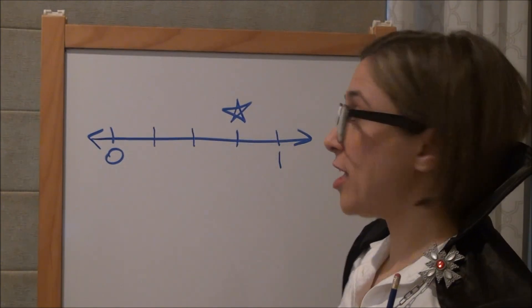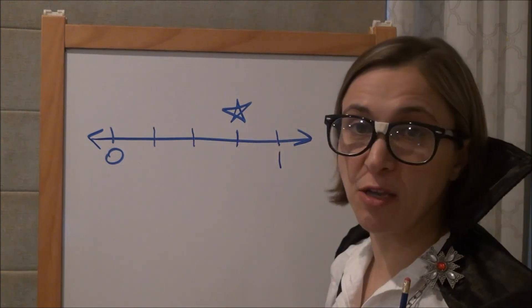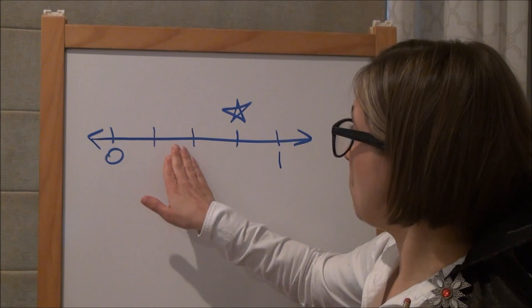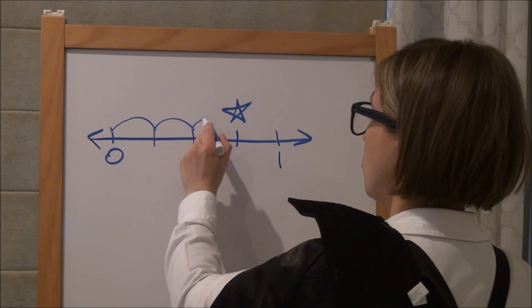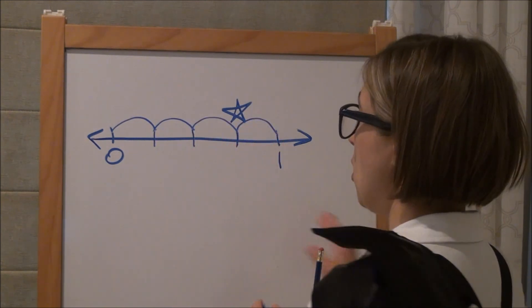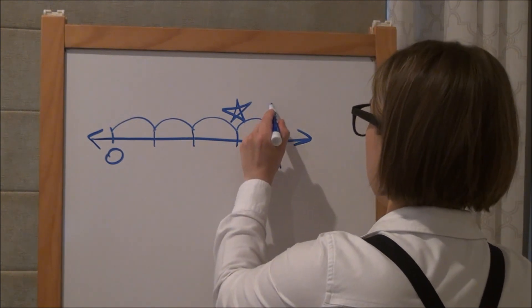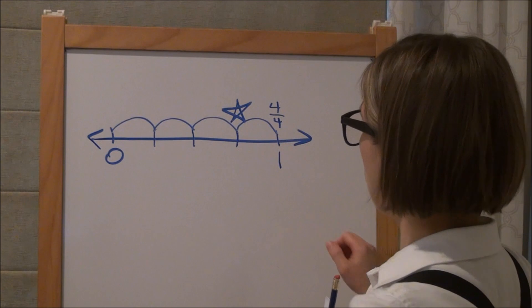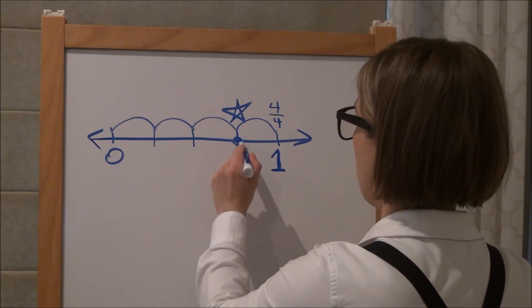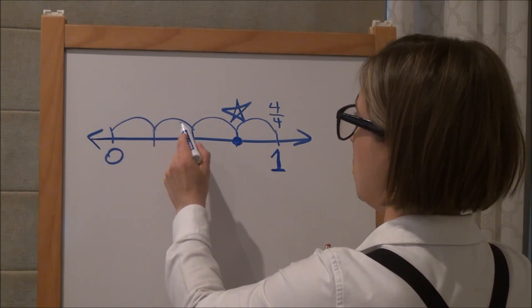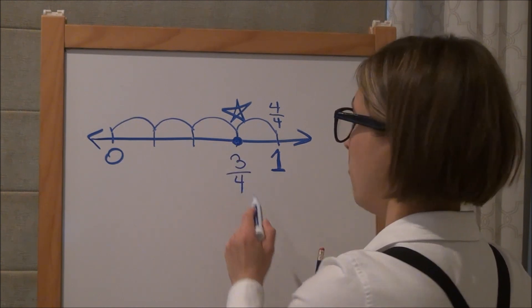Well, look at that. It changed our number line to make it easier to look at. Without changing the value of the star, we just got it to be into equal parts or equal lengths. Here's one, two, three, four. We now have four equal lengths between zero and one. This right here would be considered four fourths, which is equal to one whole. So this part right here would be one, two, three. This would be a distance of three fourths.